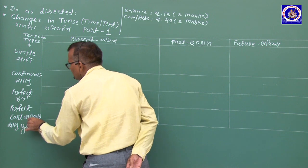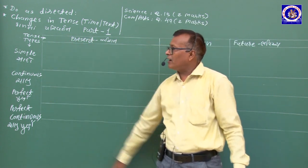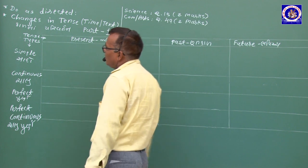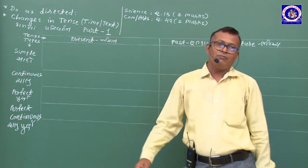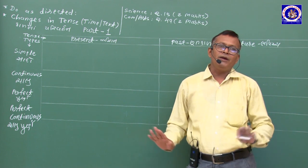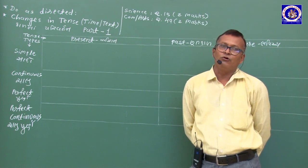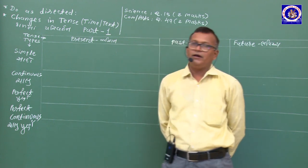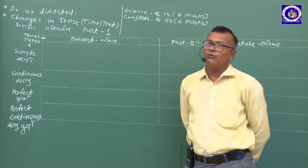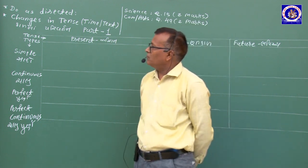Simple Present Tense — સાદો વર્તમાન કાળ: વિધાન વાક્યમાં કોઈ to-be નું રૂપ આવતું નથી. માત્ર Main Verb હોય. જો Subject 3rd Person Singular (He, She, It) હોય તો ક્રિયાપદના અંતે -s કે -es પ્રત્યય લગાડવામાં આવે છે. I, We, You, They સાથે Verb plain form આવે.